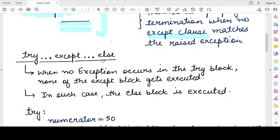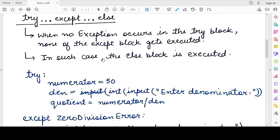The next part is the try except else clause in Python exception handling. So the else clause can be used to execute those statements, which must be executed when none of the except block gets executed.